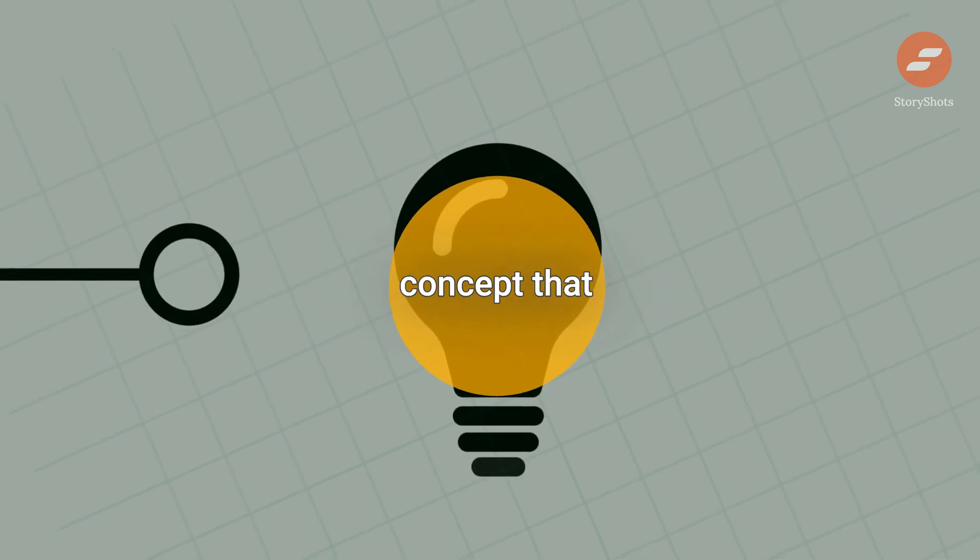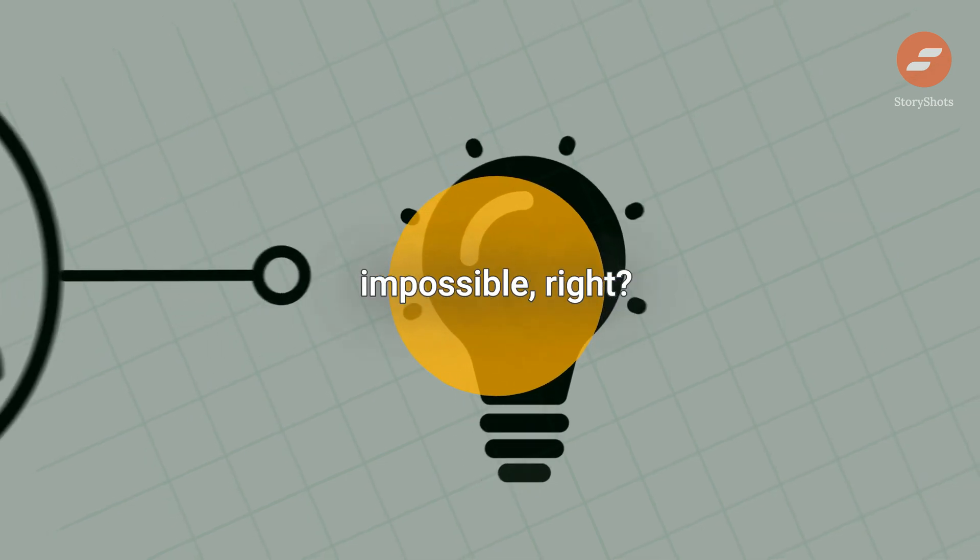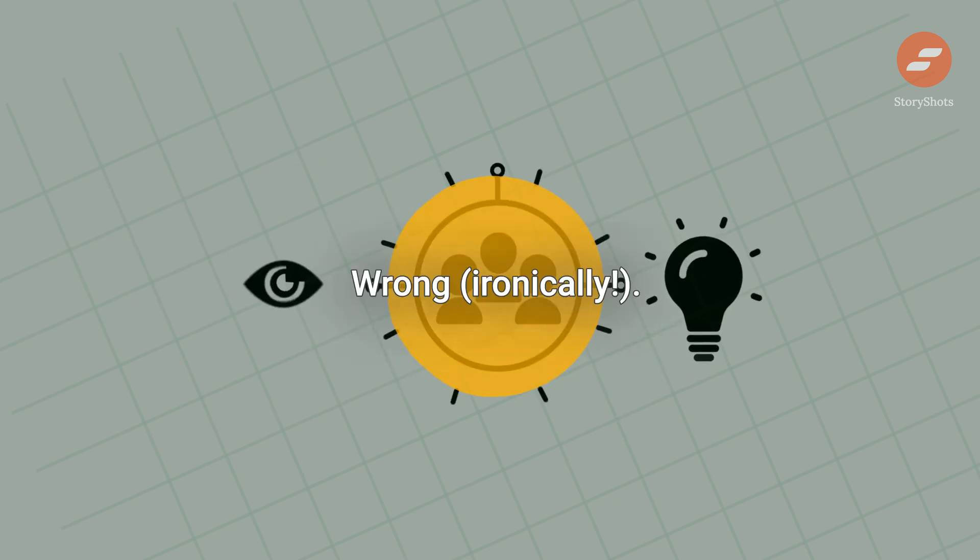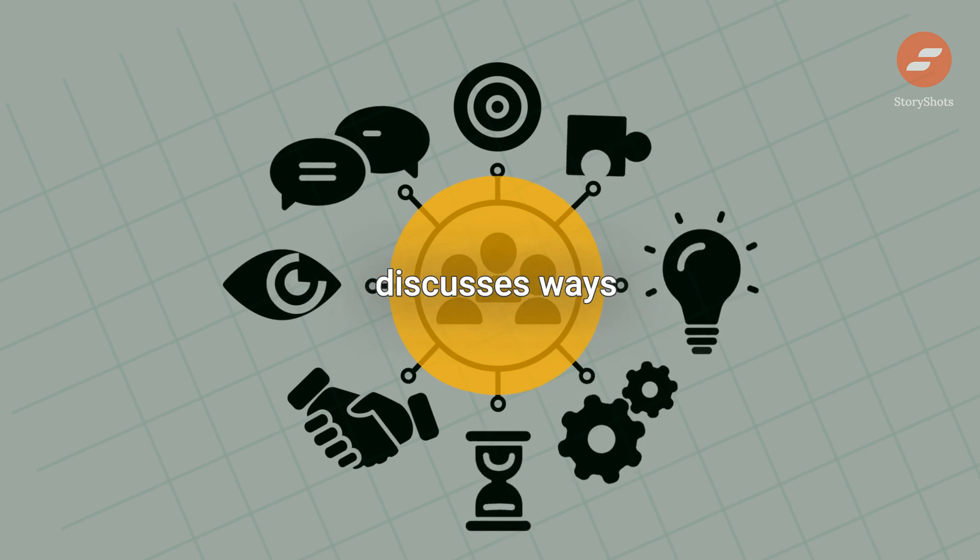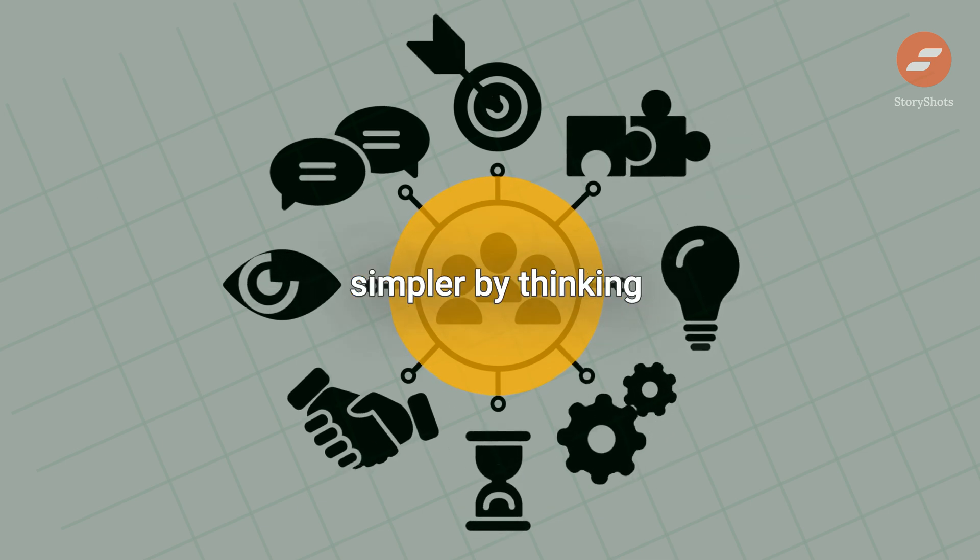Constant correct thinking is a concept that seems almost impossible, right? Wrong, ironically. How Not to Be Wrong by Jordan Ellenberg discusses ways we can make life simpler by thinking mathematically.